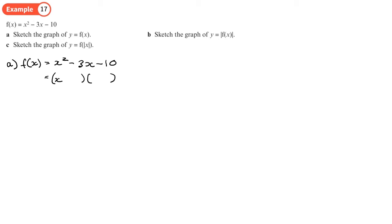So x times x, 5 and 2, so minus 5 plus 2. So it's got roots at x equals 5, x equals negative 2.